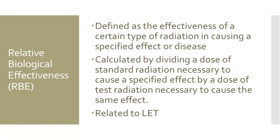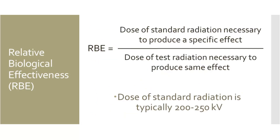It's hard to talk about LET without bringing up relative biological effectiveness. Relative biological effectiveness, or RBE, is defined as the effectiveness of a certain type of radiation in causing a specific effect or disease. The value of the RBE is calculated by dividing a dose of standard radiation necessary to cause a specific effect by a dose of test radiation necessary to cause that same effect. The RBE is related to the linear energy transfer — radiation that has a higher LET will also have a higher RBE.